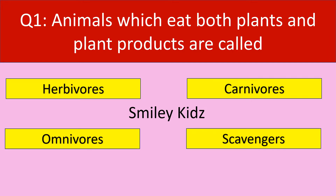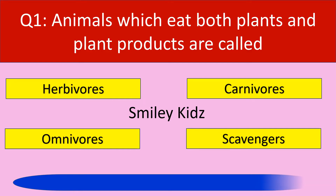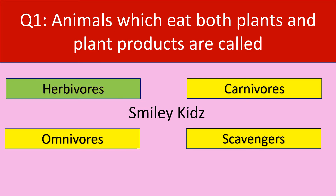Question number 1. Animals which eat both plants and plant products are called. Options are herbivores, carnivores, omnivores, and scavengers. Your time starts now. The correct answer is herbivores. Animals which eat both plants and plant products are called herbivores.